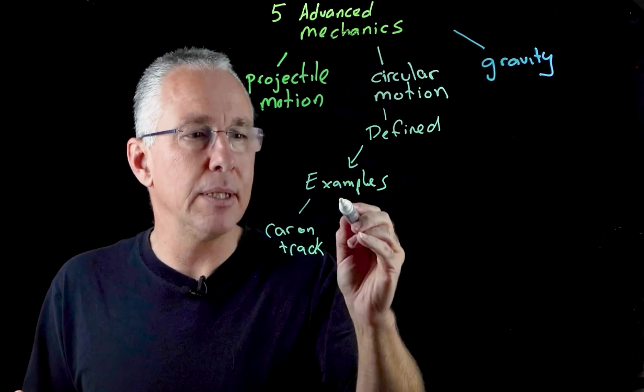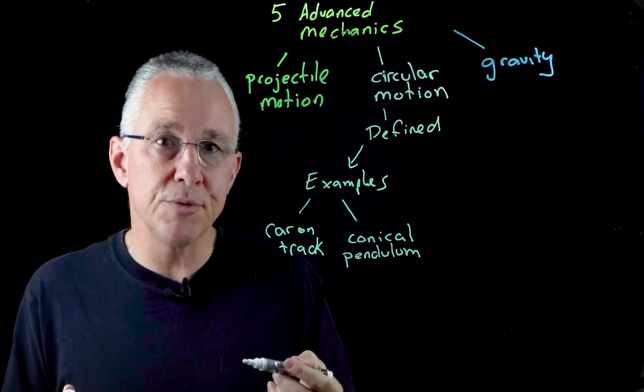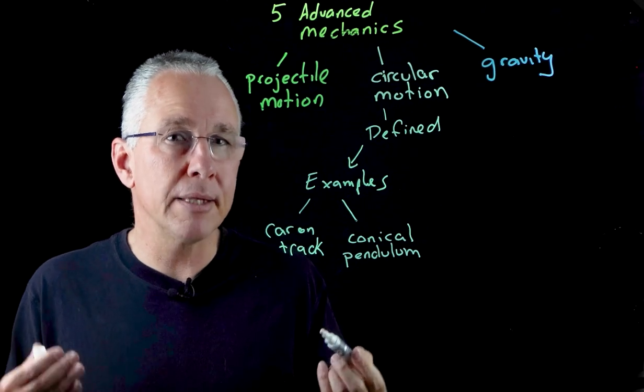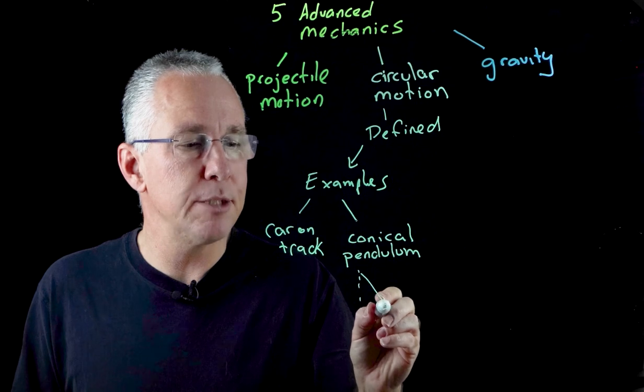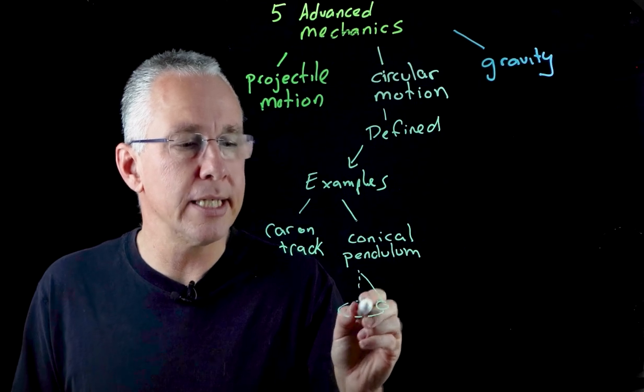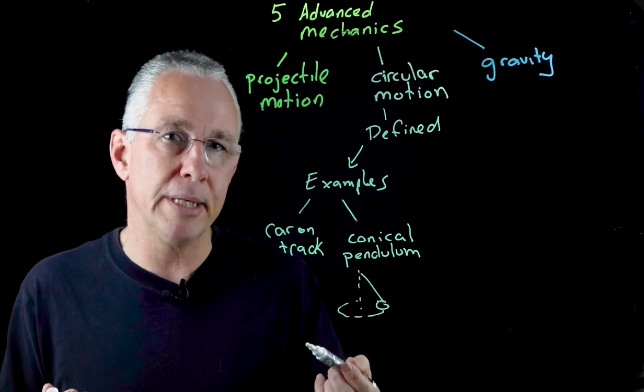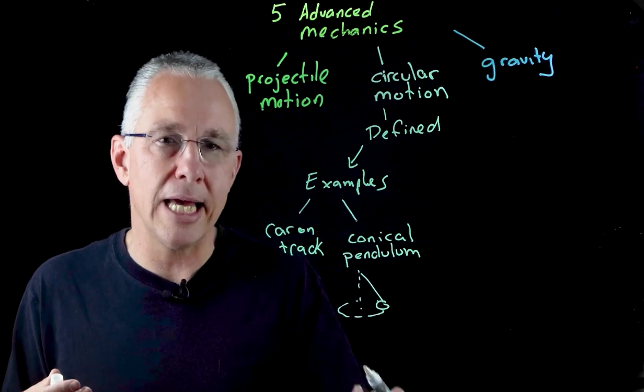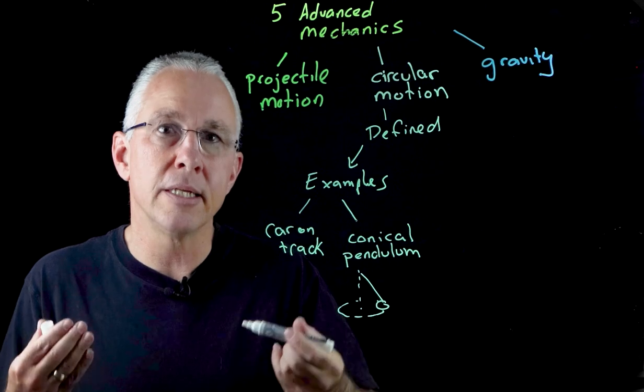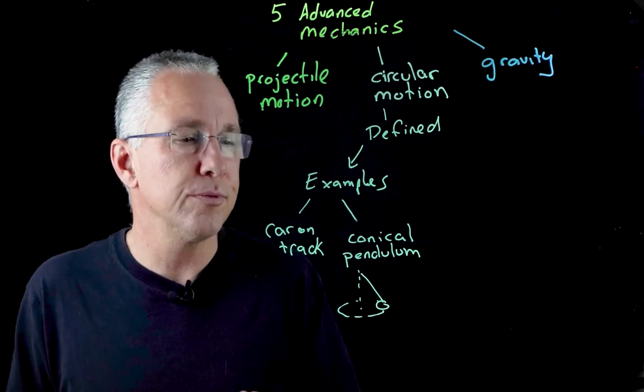The second example is a conical pendulum. There you have an object spinning in a circular path but the conical pendulum is such that if you have an object spinning it spins around in a circle like this, and so now we have two forces being applied to that: the force of gravity pulling it down and the tension, which results in the net force being the centripetal force.